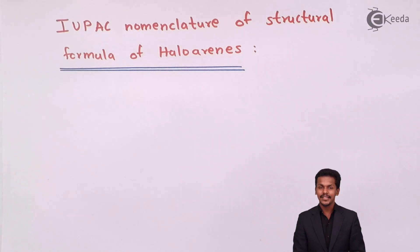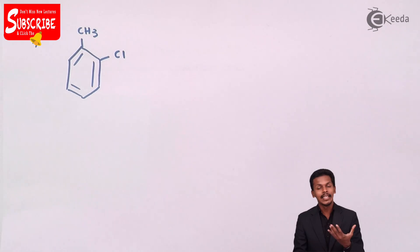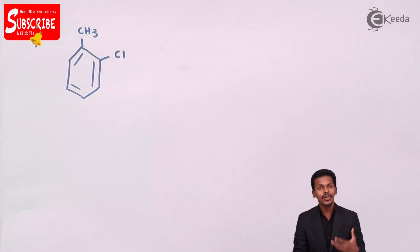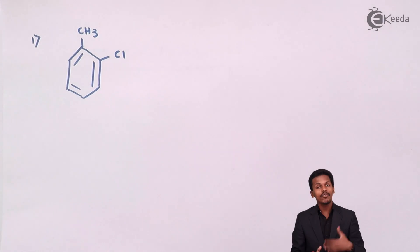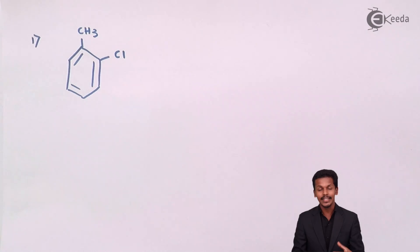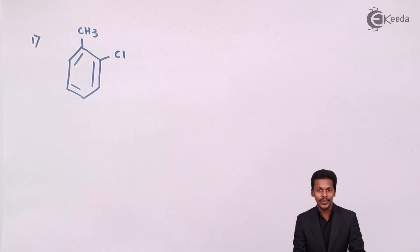Talking about the first example, this is the structure we have and we need to give the IUPAC nomenclature to it. This is basically a haloarine. Regarding preference, there are two groups attached to the benzene: one is a methyl group and one is a chloro group. We need to decide which group to give preference to — that is very important. As we understood in the IUPAC nomenclature of alkanes, we will apply the same rule here.